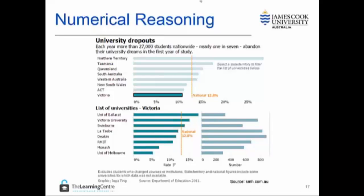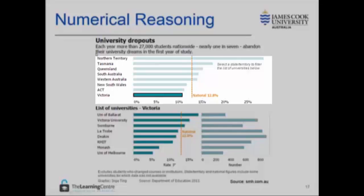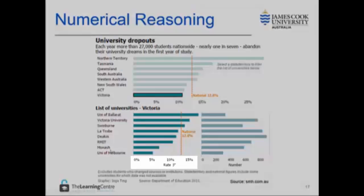So let's have a go at answering some questions related to these graphs. The first thing I need to do is identify what's measured. I can see here that it is the number of university dropouts as indicated by the Department of Education 2011. The first section of this graphic has the rate or percentage of each state and territory in Australia, and the second part of the graph narrows down to look at the universities within one state — in this case Victoria — as both a rate and a number.